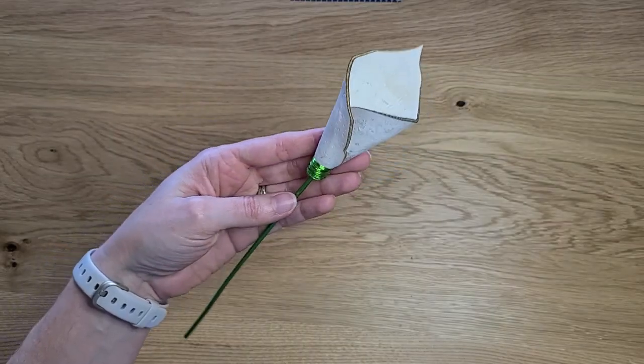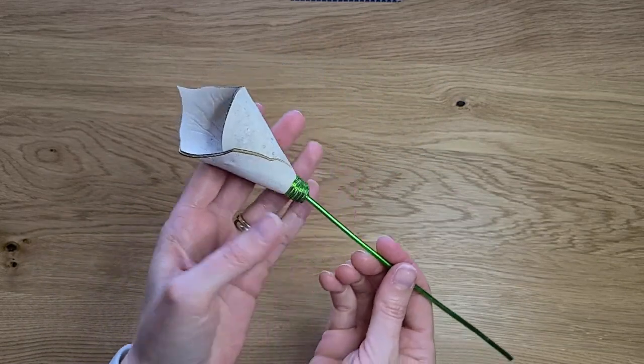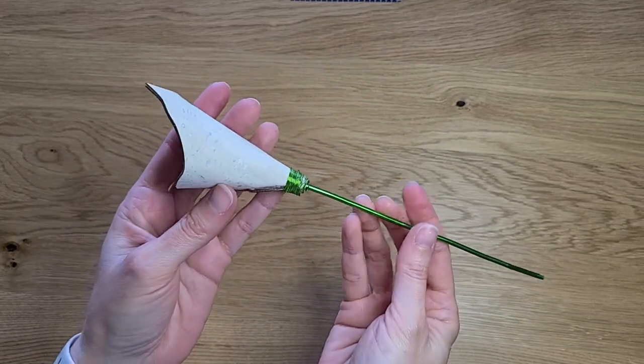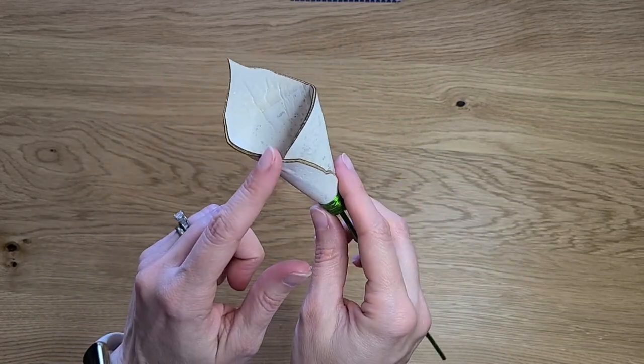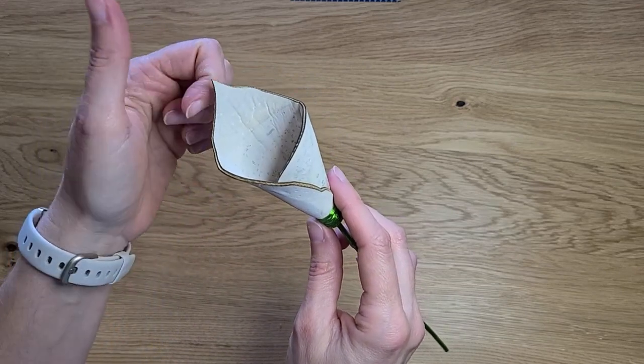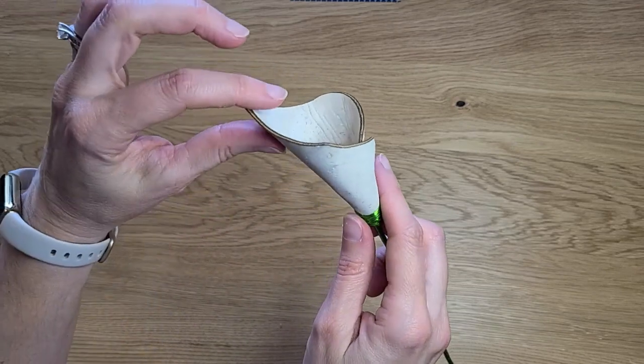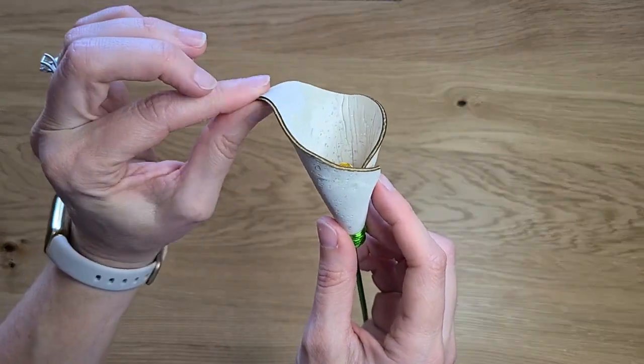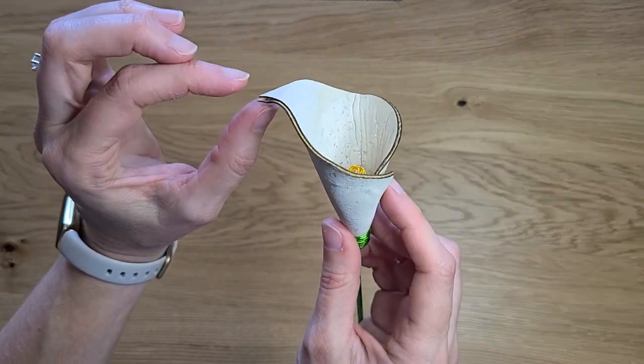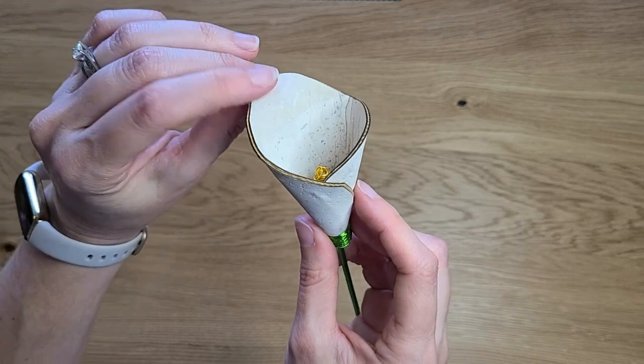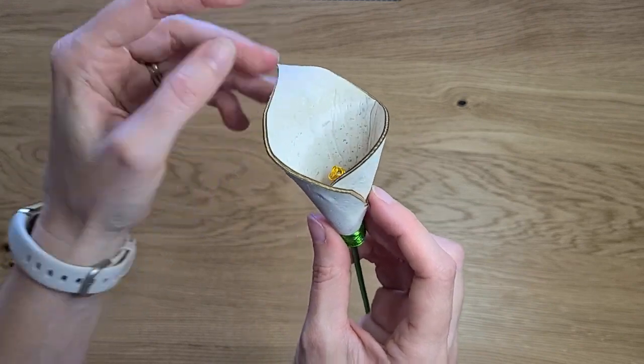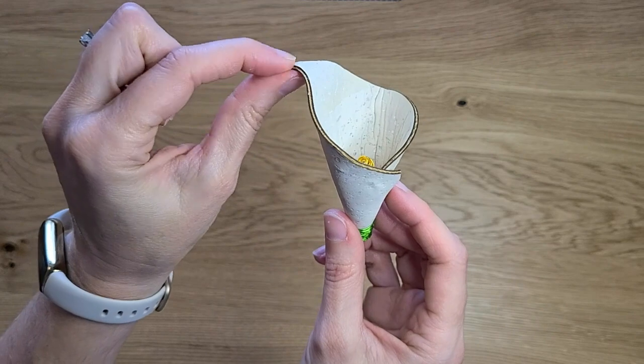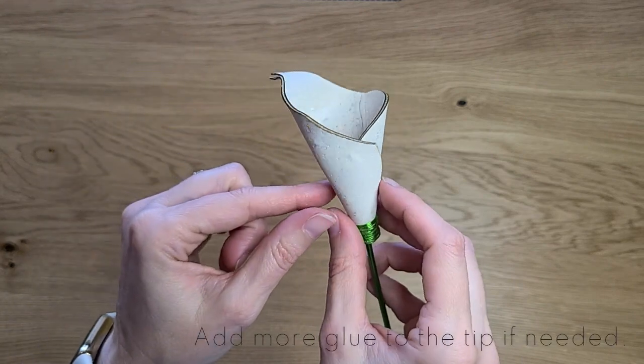Now that you have everything wrapped, we're going to shape this flower portion. The wire that you put in will let you put the bend at the tip of the calla lily as much as you want it to be. That'll give it a nice shape.